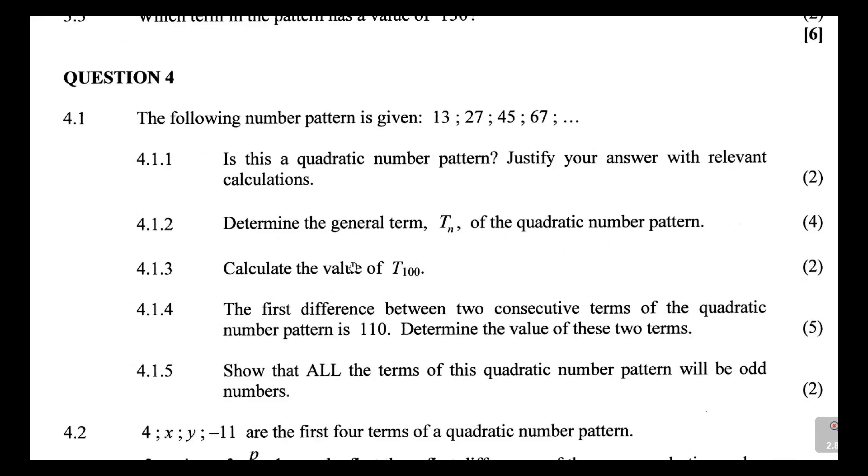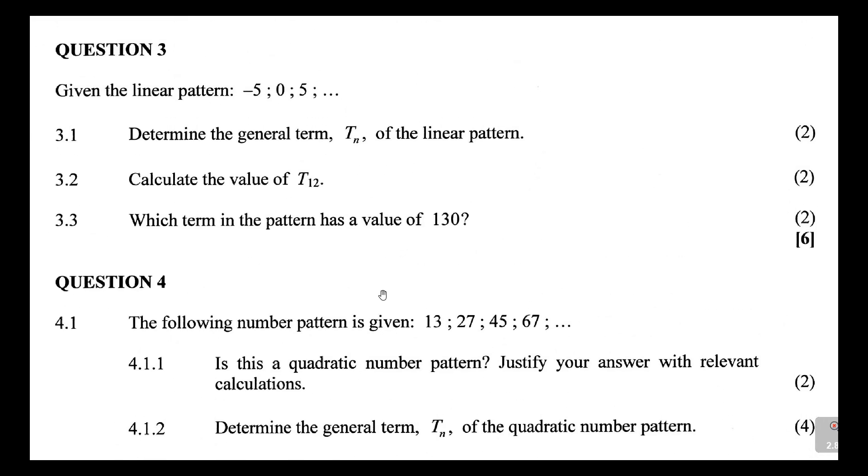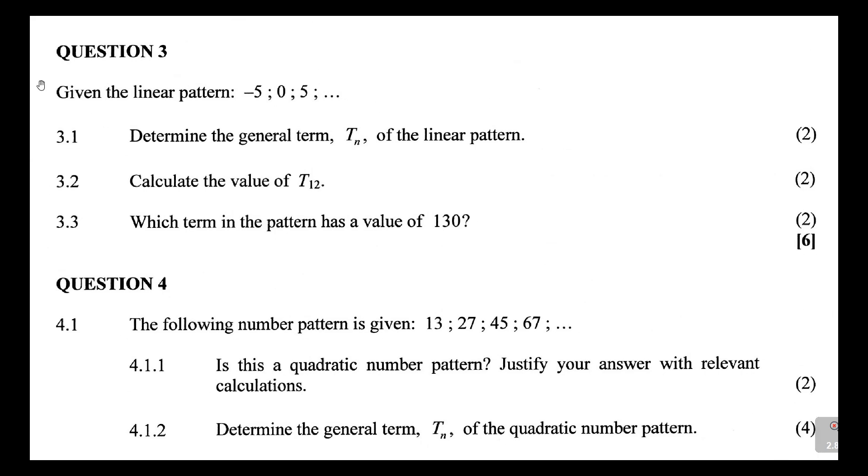Question number 3 is on number patterns. It's out of 6 marks, so it's going to be a short section, a short video. But I just want to lay some bit of foundation here on this part. Question 3, as I said, is on patterns. It says given the linear pattern, so the moment they say linear, you need to understand by linear pattern, there is a quadratic pattern and there is a linear pattern. So it says given the linear pattern negative 5, 0, 5, determine the general term TN of the linear pattern.